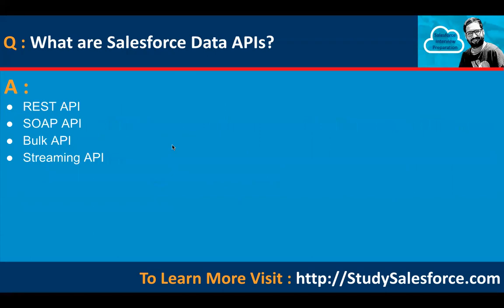What are Salesforce data APIs? There are four: REST API, SOAP API, Bulk API, and Streaming API.